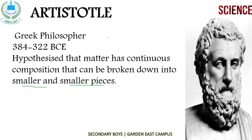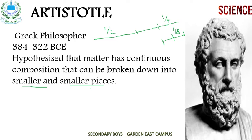For example, if we take a piece of wood and divide it into 2, it becomes half. Divide that half into 2 pieces and it becomes one-quarter. Divide that one-quarter into 2 and it becomes one-eighth. According to Aristotle, matter is a substance which can be broken down into smaller and smaller parts indefinitely, and it has a continuous composition — meaning matter is equally distributed everywhere within that substance.